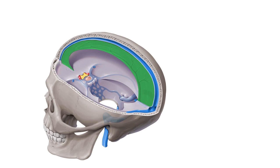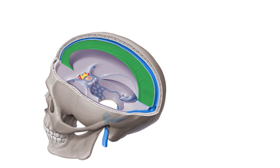The periosteal and inner meningeal layers of the cranial dura mater also contribute to the formation of dural venous sinuses, which enable the brain's venous blood to be drained to the internal jugular vein. The Falx cerebri contains two dural venous sinuses.